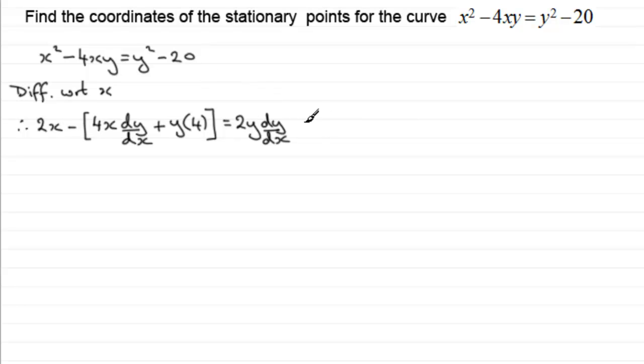So being a function of y, differentiated with respect to y, that would be 2y. But remember, we have to put the dy by dx on the end when we're doing implicit differentiation. And then we differentiate the constant minus 20 with respect to x. That's going to be 0.